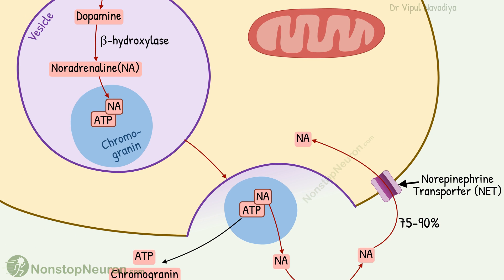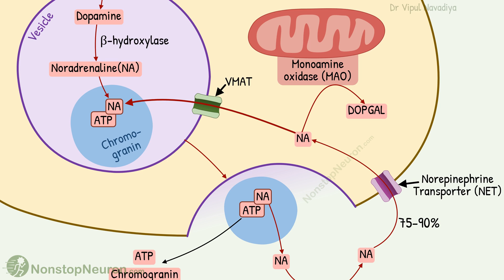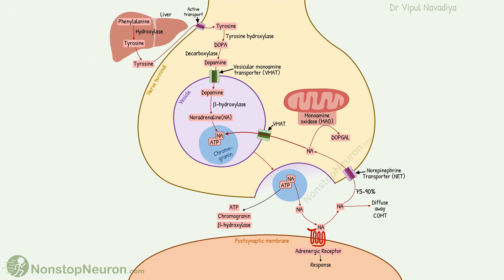The mitochondrial membrane contains an enzyme called monoamine oxidase, which degrades noradrenaline present in the cytoplasm. However, once inside the cell, the noradrenaline is quickly taken back up into vesicles by VMAT, so degradation by monoamine oxidase is minimal. Some noradrenaline in the synaptic space may also diffuse away, contributing to termination of its action. This diffused noradrenaline is degraded by catechol-O-methyltransferase, or COMT.